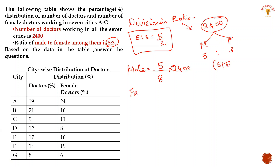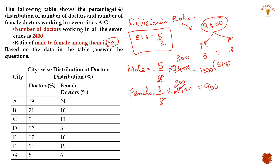Similarly, for female doctors: 3 divided by 8 into 2400 gives the female count. So this is the basic concept — we cancel and compute. The male value comes to 1500, and the female value comes to 900.